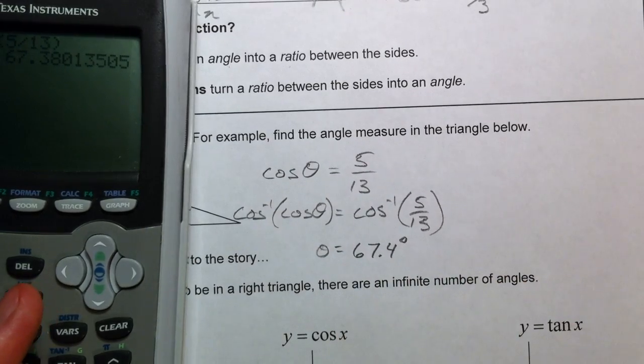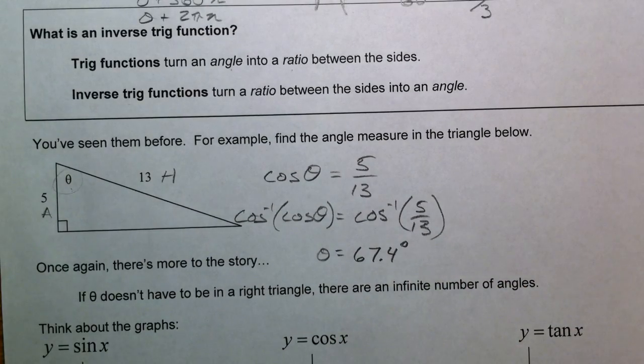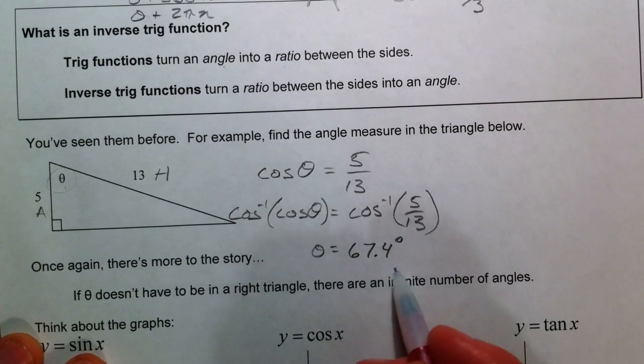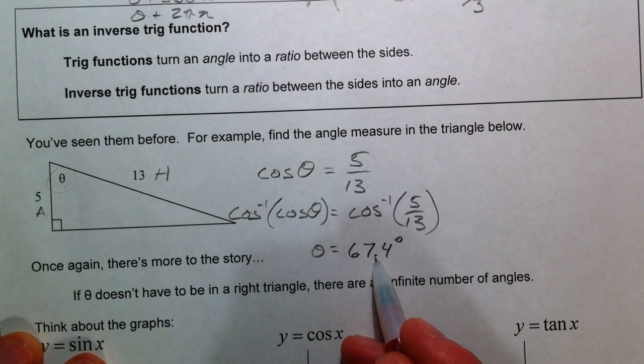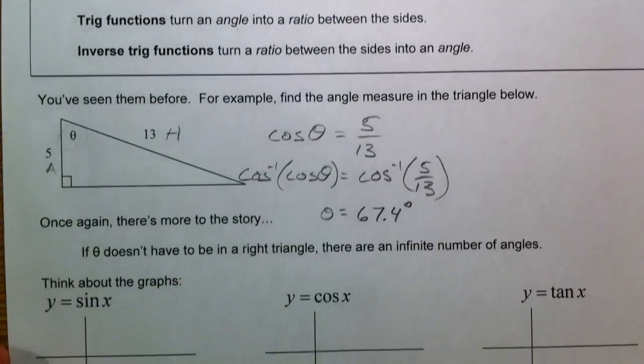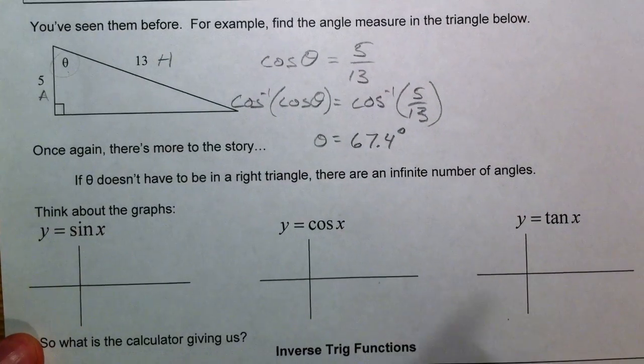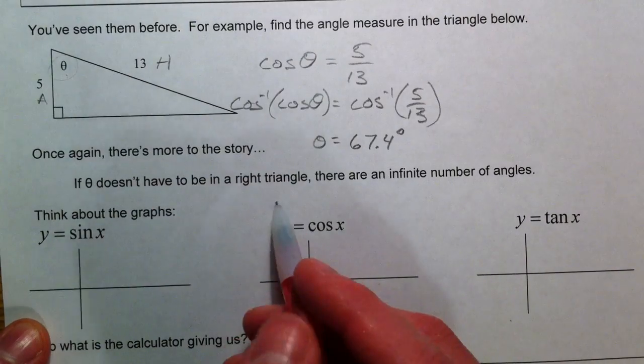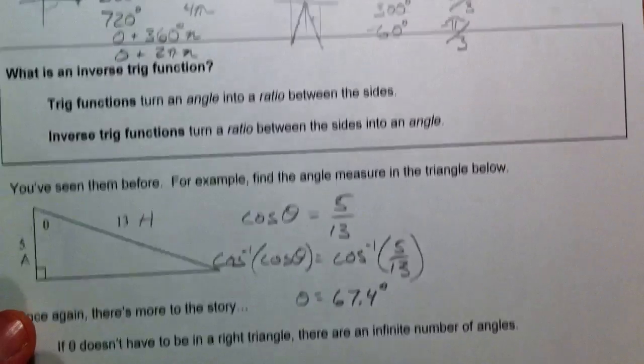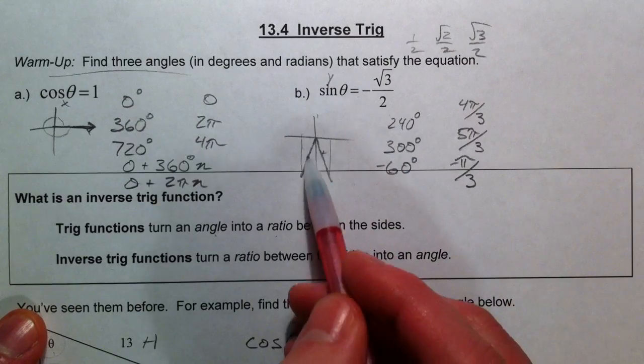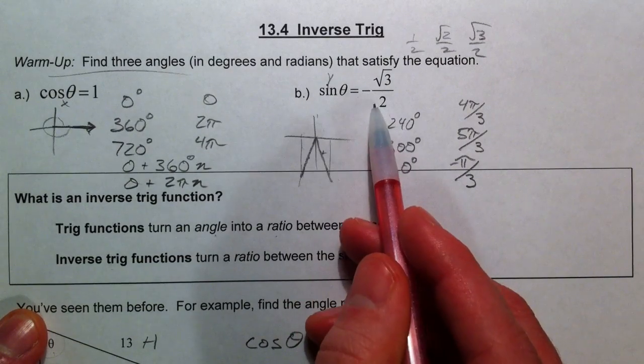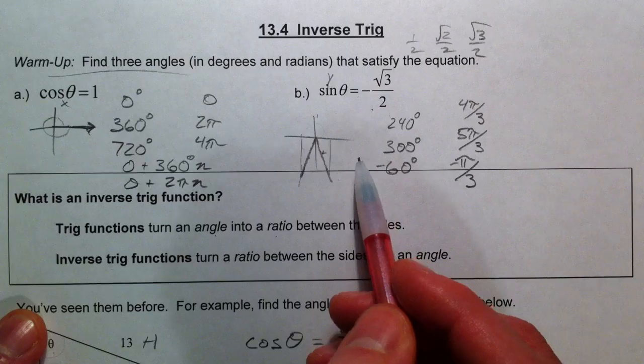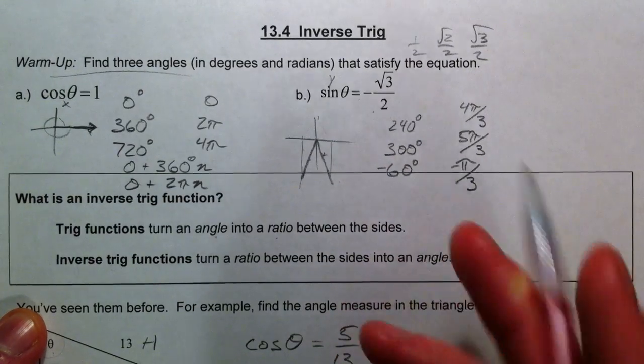Now, notice that the calculator only gives you one angle, when really there's infinite angles. If you're outside of the right triangle, which we saw up here, there were two angles just in zero to 360 that had negative root three over two as an answer, and you could keep going and going.